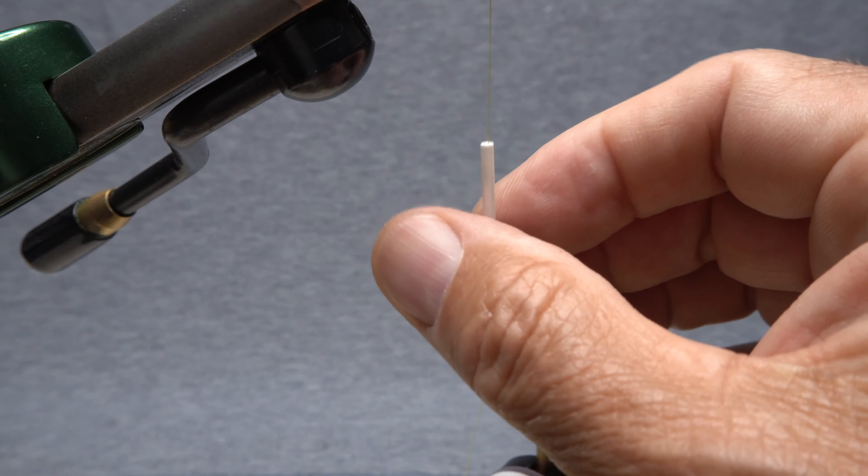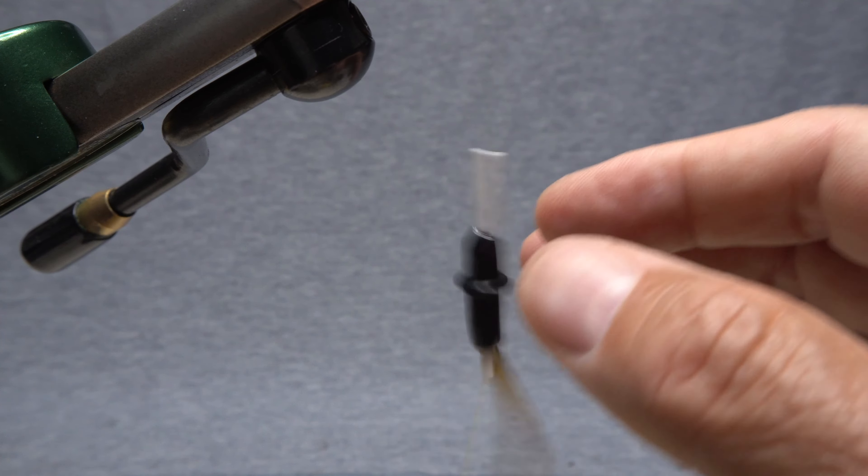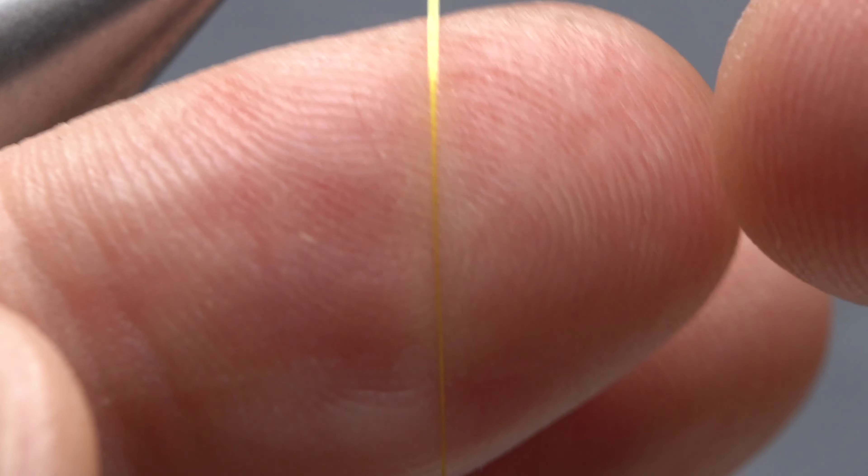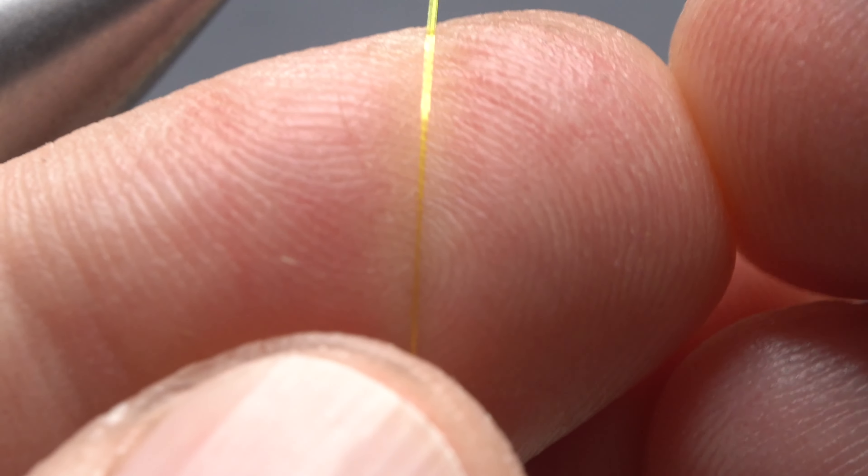Give your bobbin a counter-clockwise spin as if you're looking down on it to uncord and flatten the thread. Using a dubbing needle, continue to tease the thread flat, then split it with the point of the needle.